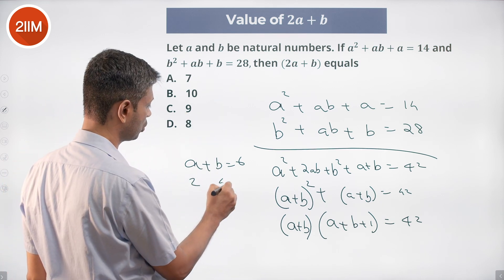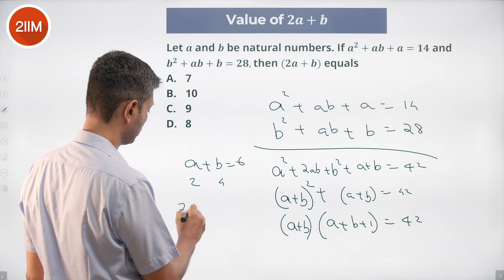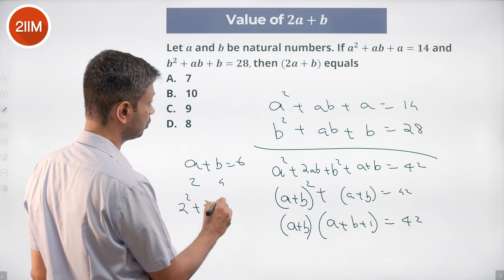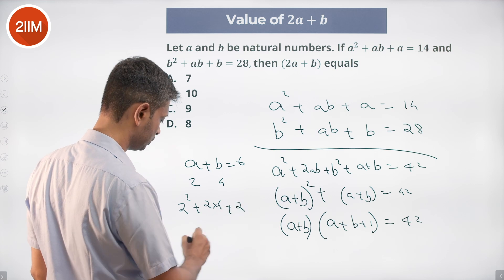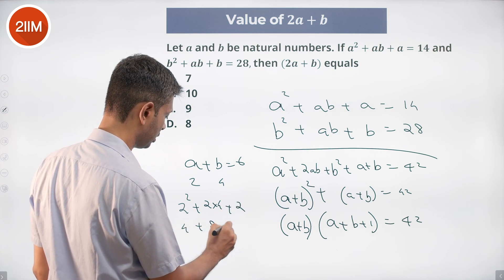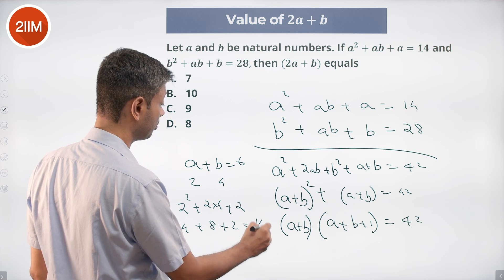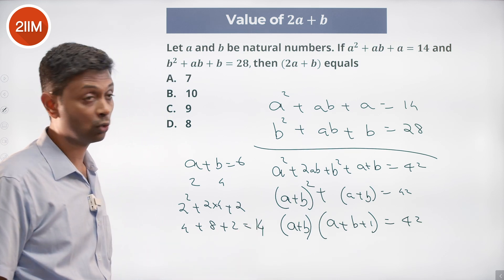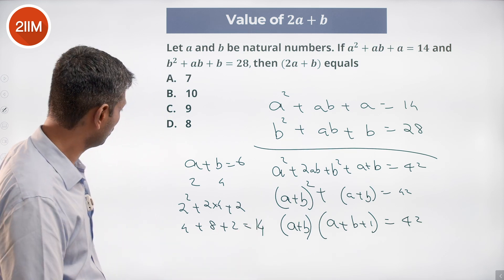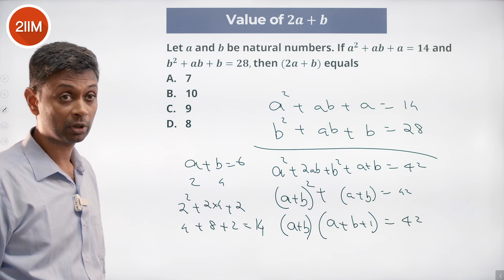Put a as 2, b as 4. 2 squared plus 2, 4 plus 8 plus 2 is 14. Yep, that works. a is 2, b is 4. That should work. So what is 2a plus b? 2 into 4 plus 4 is 8.